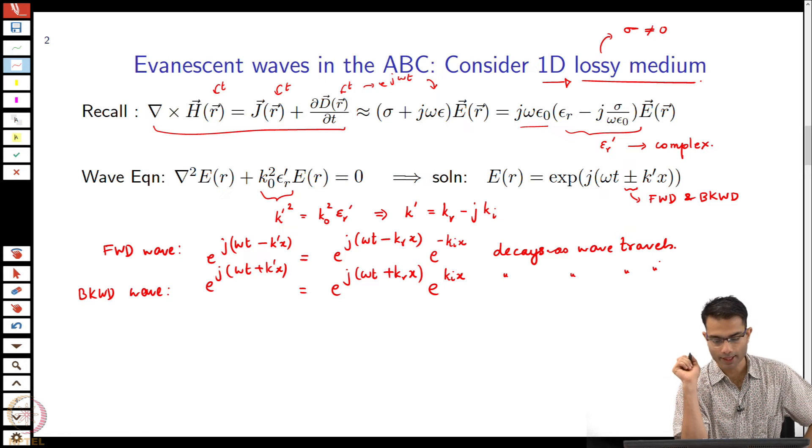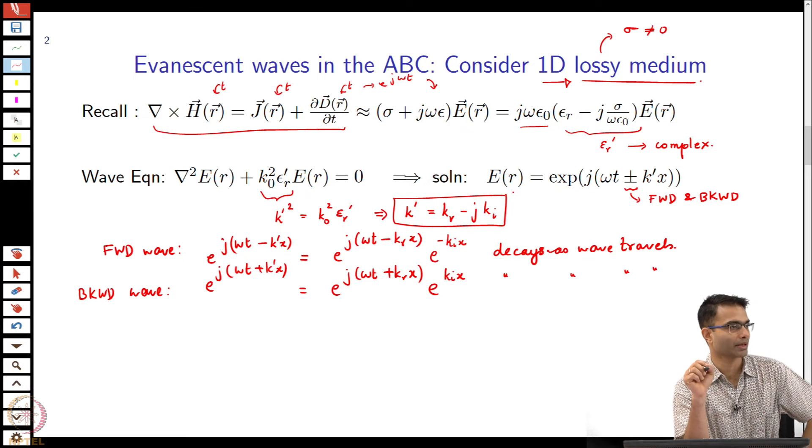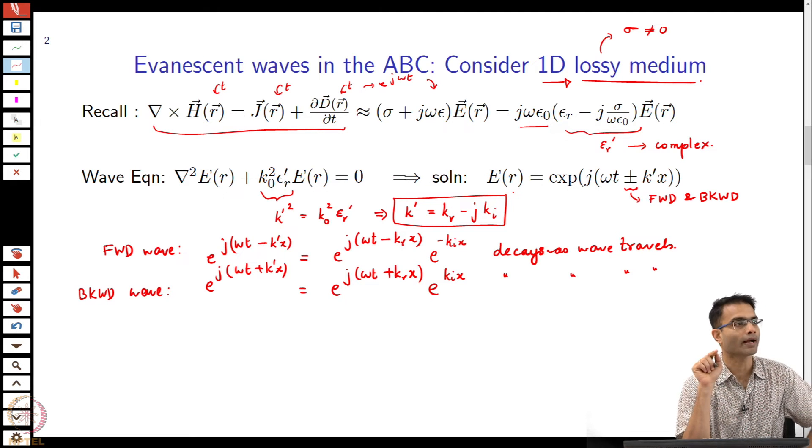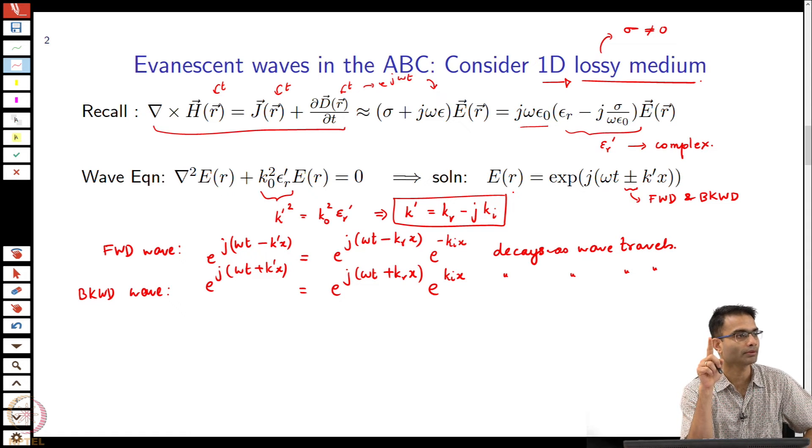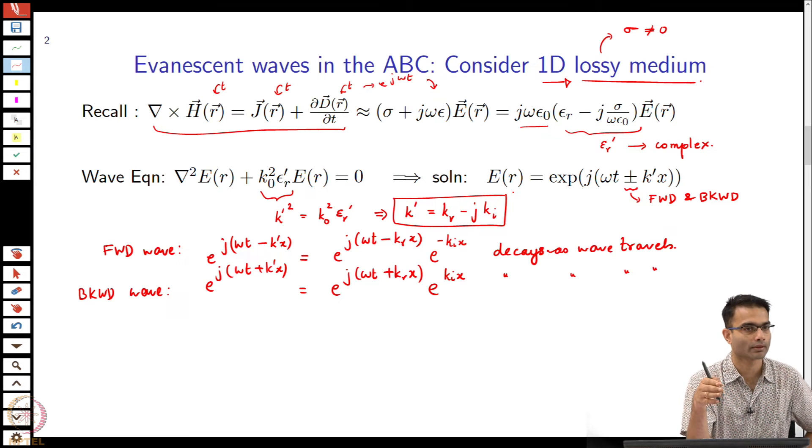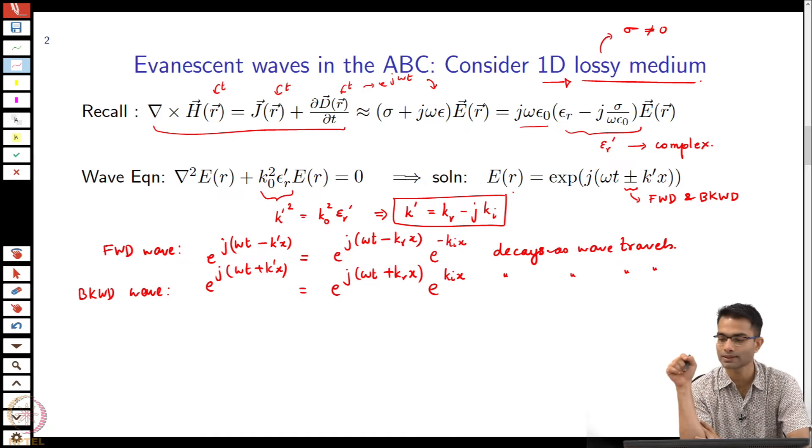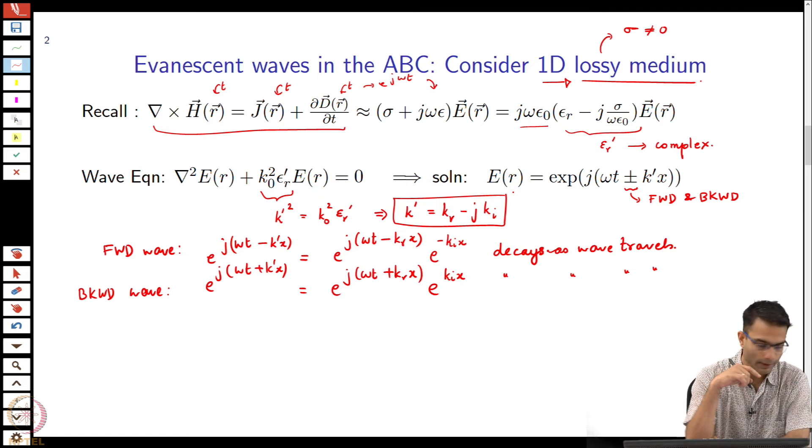One quick thing I want to point out: this k prime which I have written as k_r minus j k_i, both k_r and k_i will turn out to be positive numbers. If I had the opposite sign convention for time, if I had e to the minus j omega t what will happen? You will get a plus sign over here because your time convention does not change the physics of the problem but the wave will decay. Some places will have a e to the minus j omega t convention. In that case the effective permittivity will have a positive imaginary part.